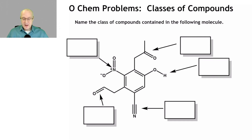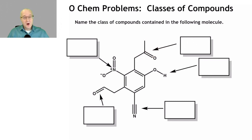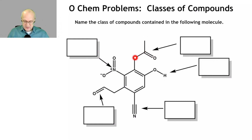Start here, top right. This arrow is pointing at that group right there. It's a carbonyl-containing group, so start thinking about your carbonyl-containing classes. This is a carbonyl flanked on either side by a carbon group. So that is ketone.